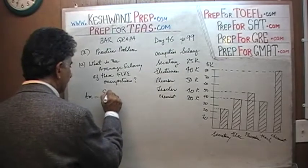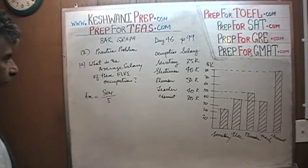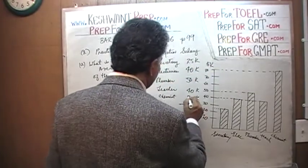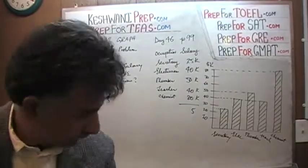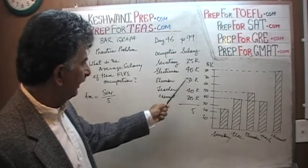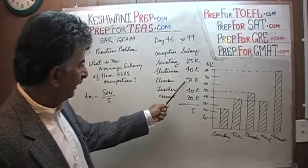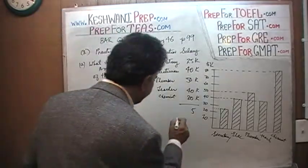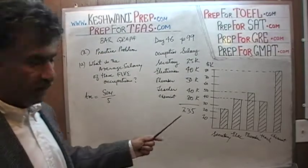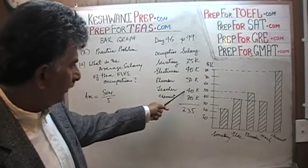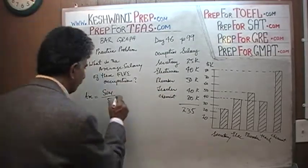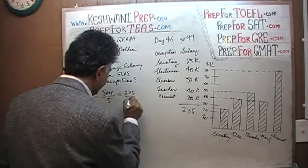The sum is going to be the sum of these five professions divided by five because there are five of them. Four plus four is eight, eight plus two is ten, and then five plus eight is thirteen, thirteen plus ten is twenty-three. So it turns out the sum is $235,000. So it's 235 divided by 5.